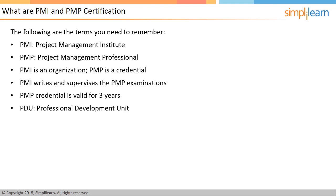After submitting the information about the acquisition of at least 60 PDUs in the last three-year period, you need to pay the renewal fee in order to renew the certification for another three years. This can be conveniently done online at www.pmi.org.